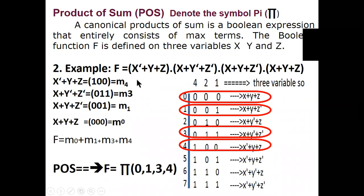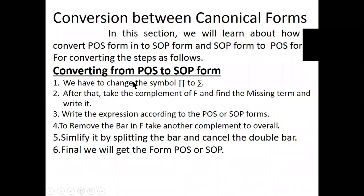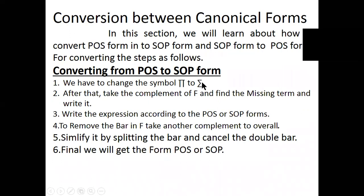Now we come to conversion of canonical form — converting from POS to SOP form, and likewise SOP to POS form. First we will see converting from POS (Product of Sum) to SOP (Sum of Product); in other words, max term to min term. For doing this there are six steps we have to follow. First, change the symbol pi to sigma, because POS symbol is pi and SOP symbol is sigma. Then take the complement of f and find the missing terms.